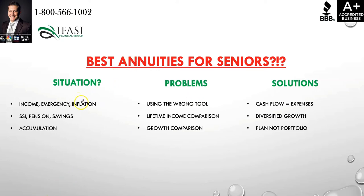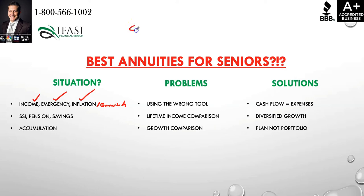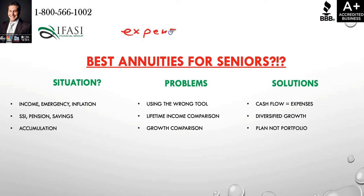The easiest way to give an individual peace of mind for their retirement is to break down their situation into three major areas: the first area is income, the second is emergency, and the third is inflation and growth. If you fast-forward to nearing or being in retirement, it's important to have enough cash flow equal to what your expenses are. If your expenses are greater than your cash flow, that's obviously a problem.